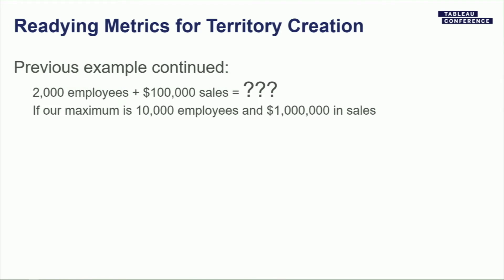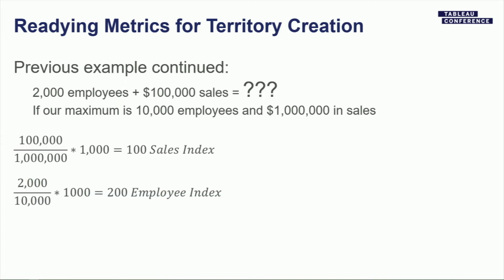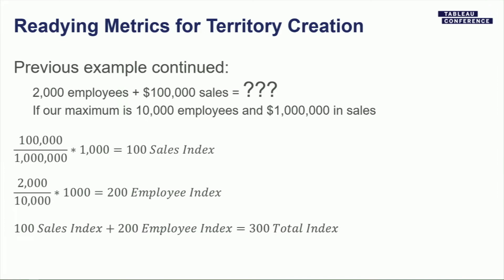Once aggregated at the postal code, state, or account level, we divide by the maximum observed value in our entire data set and multiply by our desired maximum — whether that's a scale of zero to 1,000 or zero to 10,000, depending on how many zeros you like to see. For example: if the global maximum is 10,000 employees and $1 million in sales, and we have $100,000 in sales, we divide by a million, multiply by 1,000, and get a sales index of 100. If we have 2,000 employees with a maximum of 10,000, we get an employee index of 200. Weighted equally, the composite score is 100 + 200 = 300.